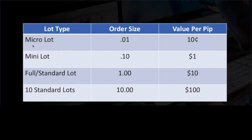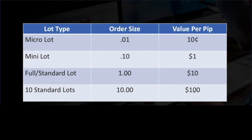Let's cover lot size and value. A micro lot is like a penny position — each point you gain equals $0.10 in profit. A mini lot is like a $0.10 position — each point in profit equals $1.00. A full standard lot is like a $1 position — each point in profit equals $10. And ten full standard lots is like a $10 position — each point in your favor equals $100. The more money in the market, the more potential profit by dollar amount.